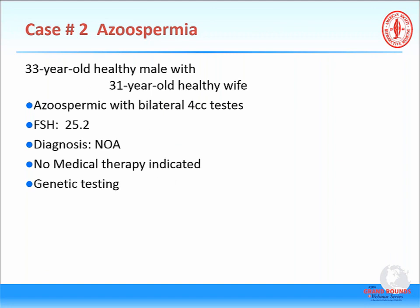Back to our patient: he is azoospermic with FSH of 25, LH of 15, normal testosterone, and normal estradiol. Clomiphene citrate and anastrozole are not indicated because of his normal testosterone and elevated FSH and LH. We should now start thinking about genetic testing and how the results could change management.